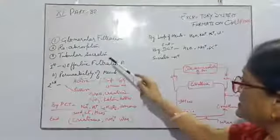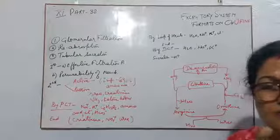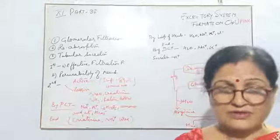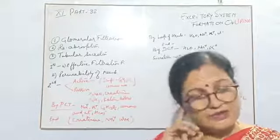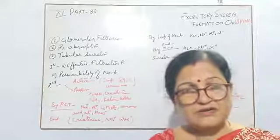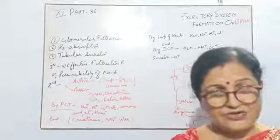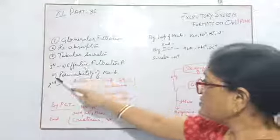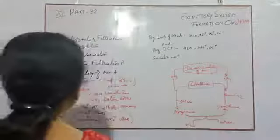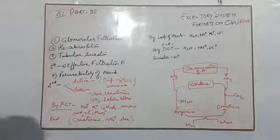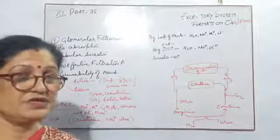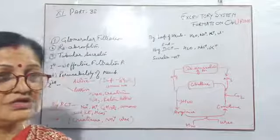The next steps are reabsorption and tubular secretion. For glomerular filtration, since it is an arteriole, the lumen or cavity will be very narrow, creating pressure. The efferent arteriole has a smaller diameter than the afferent arteriole, so it also creates a high hydrostatic pressure. Filtration takes place due to two effective measures. One is effective filtration pressure — the pressure due to the presence of fluid — which helps filter the blood.